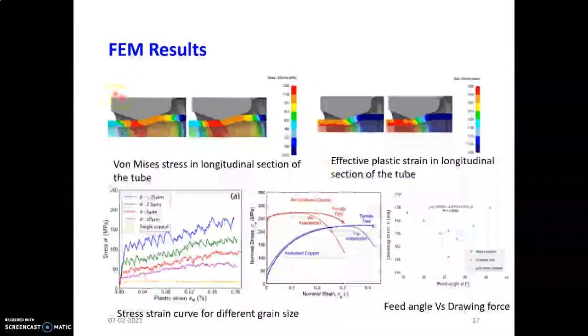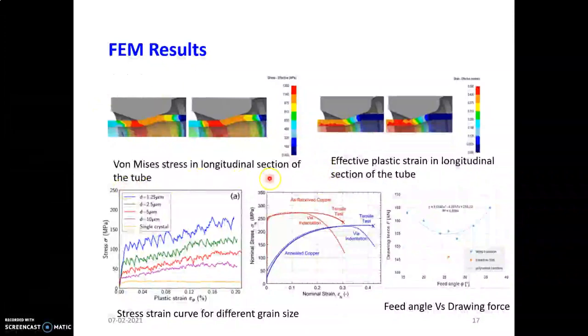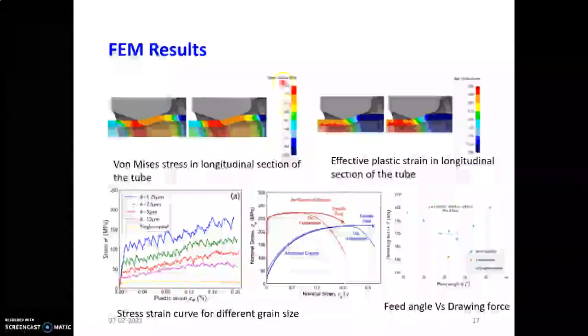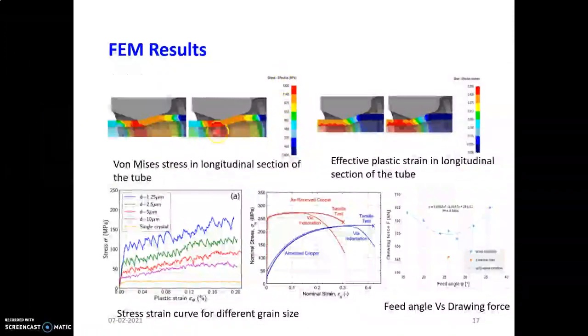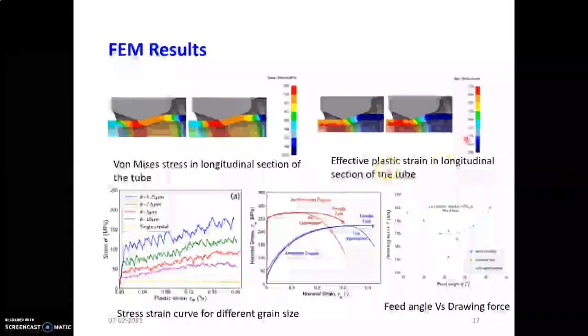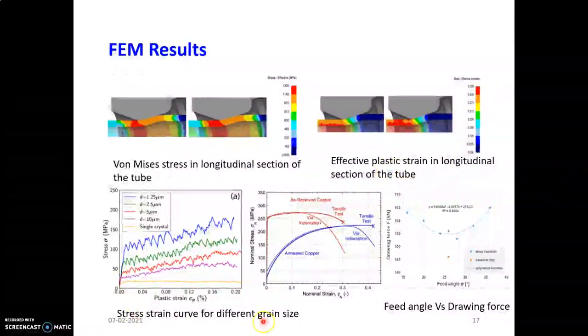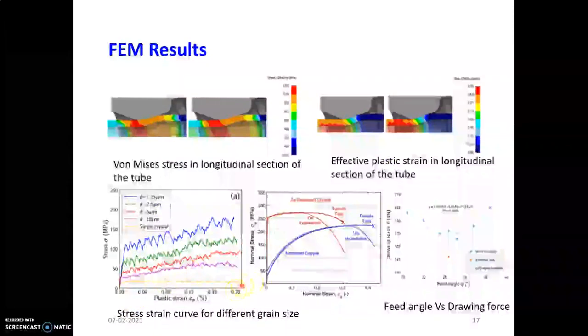These are the results. Von Mises stresses in the longitudinal section of the tube - stress was 1300 megapascals after passing through the die. This is effective plastic strain in the longitudinal section of the tube - the plastic strain is 0.5, which is high. Stress versus plastic strain graph for different diameters.